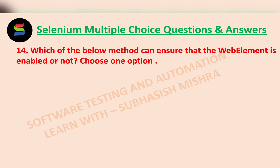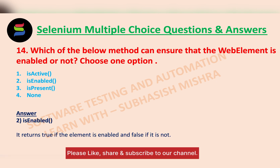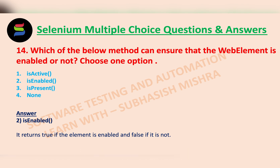Which of the below methods can ensure that the web element is enabled or not? You have to choose one option: isActive, isEnabled, isPresent, or None. The answer is isEnabled — it returns true if the element is enabled and false if it is not.